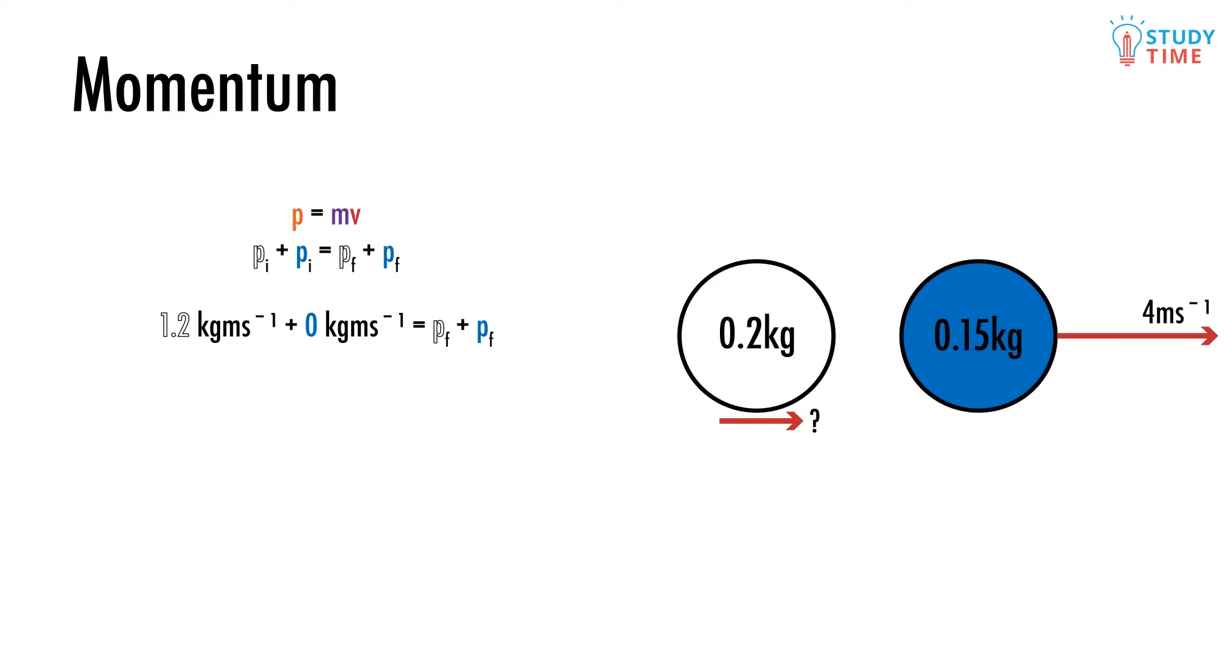To make things worse, we don't know what the velocity of the white ball is. However, that doesn't stop us from giving the total final momentum a go. For the white ball, the momentum will just be 0.2 kilograms times some velocity. For the blue ball though, the momentum will be 0.6 kilogram meters per second.